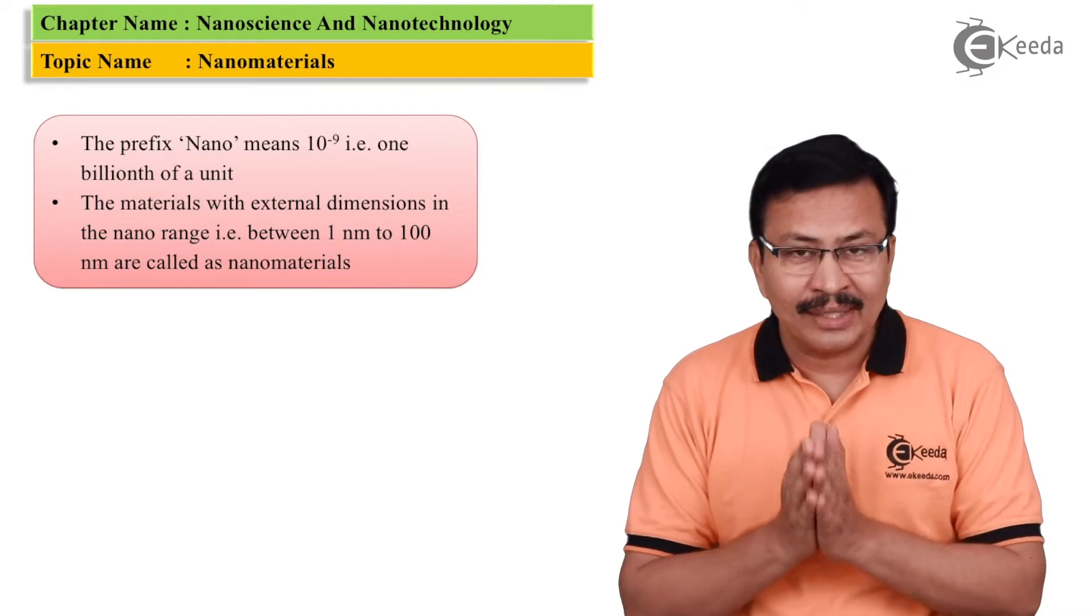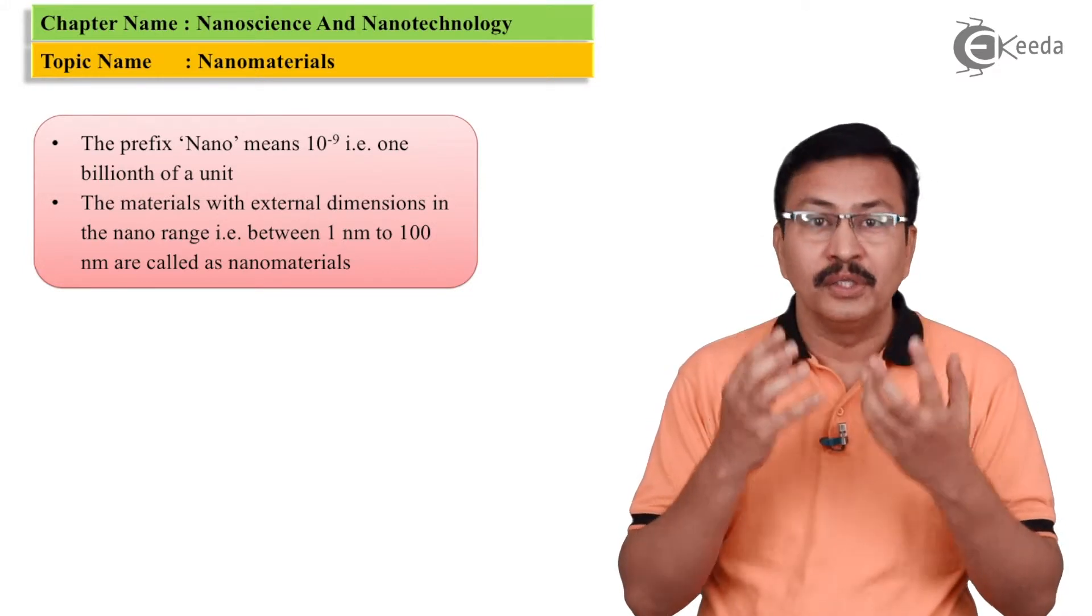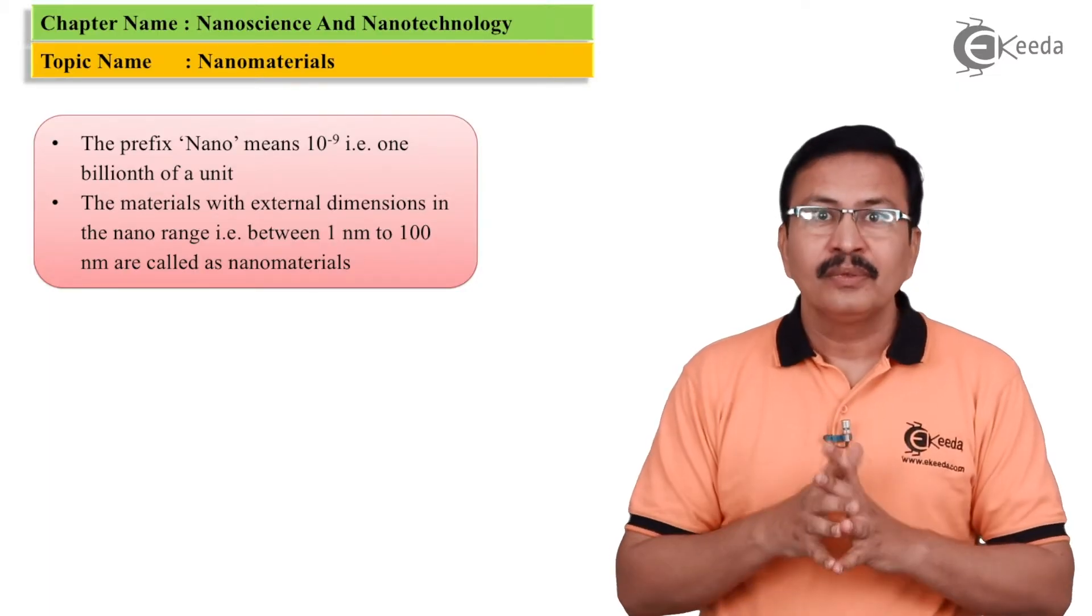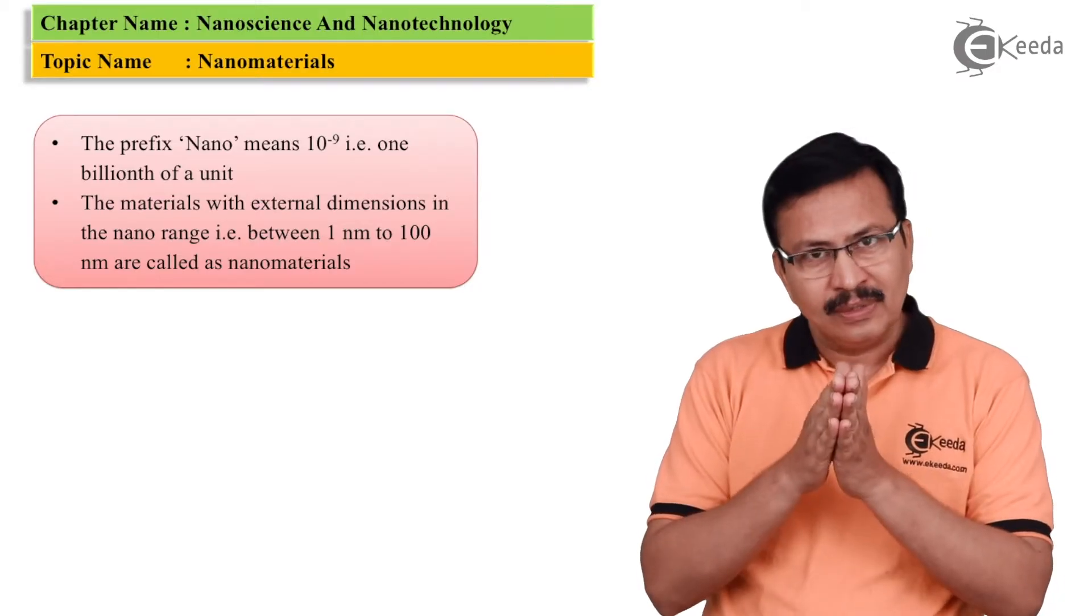All of you know that we use this angstrom in measuring the dimension of atoms. We also use the angstrom in measuring the dimensions of a nucleus of an atom. So, how do I compare between angstroms and nanometers?